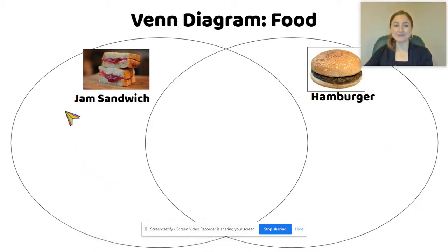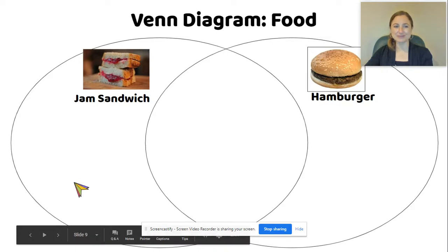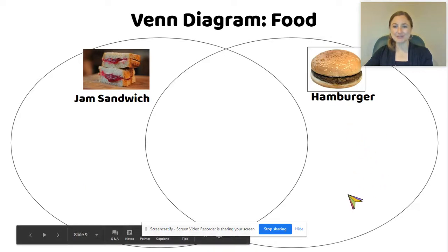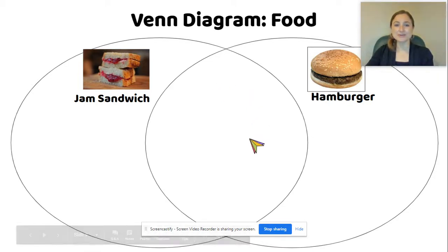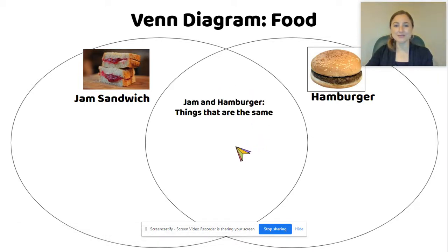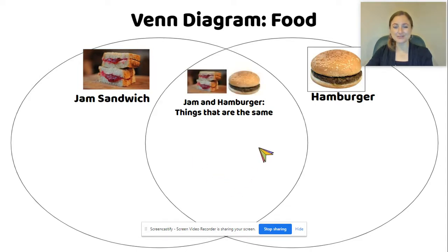Over here, we're going to be listing things that are special about the jam sandwich, and things that are special about the hamburger. Now here in the middle, where the two circles overlap — where they cross each other — this is where we're going to talk about how the jam sandwich and the hamburger are the same. So I've put the jam sandwich and the hamburger there for us to see.